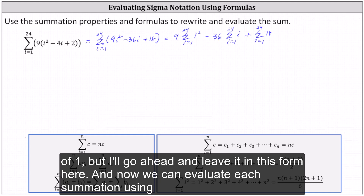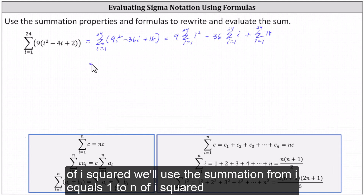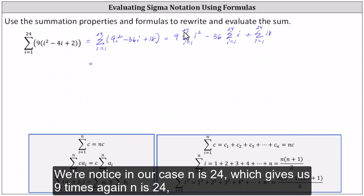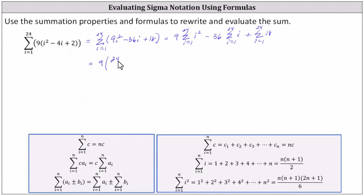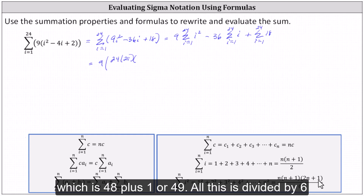And now we can evaluate each summation using the summation formulas. For 9 times the summation from i equals 1 to 24 of i squared, we'll use the formula: the summation from i equals 1 to n of i squared equals n times the quantity n plus 1 times the quantity 2n plus 1, all divided by 6. In our case n is 24, which gives us 9 times 24 times 25 times 49, all divided by 6.